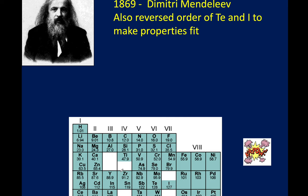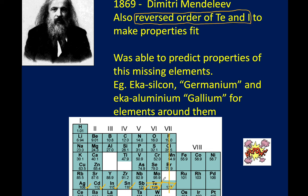Something else super clever was that he reversed the order of tellurium and iodine. The atomic weight of iodine at 127 would place it earlier in the sequence, but the properties of iodine worked best with the elements in group 7. So Mendeleev was brave and placed iodine in group 7 and tellurium in group 6. Because of this understanding and arrangement, he was able to make very precise predictions about the properties of undiscovered elements.